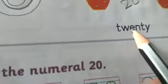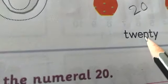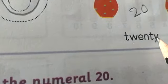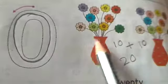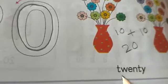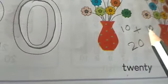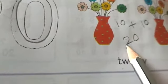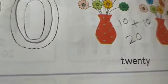20 — T, W, E, N, T, Y — twenty. 2 tens is equal to 20.